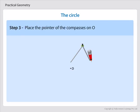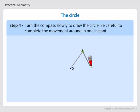Step 3. Place the pointer of the compasses on O. Step 4. Turn the compasses slowly to draw the circle. Be careful to complete the movement around in one instant.